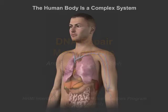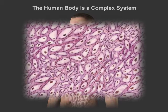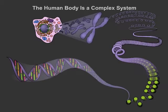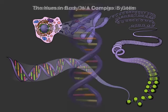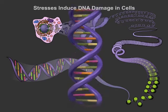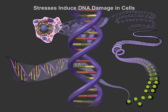The human body is made of organ systems that are composed of a multitude of cells. Throughout their life cycle, cells undergo many stresses that induce errors in the genetic code. These errors occur on the order of tens of thousands of DNA lesions per day.